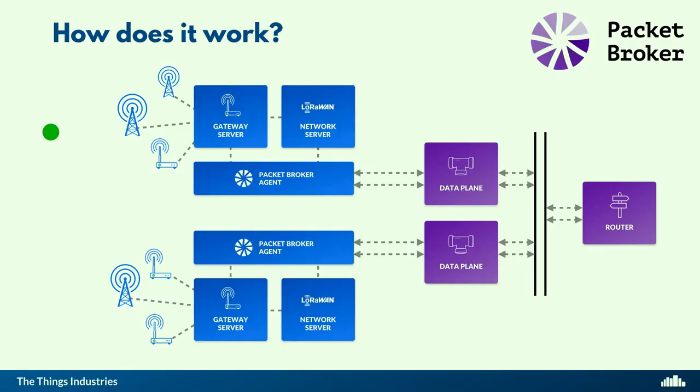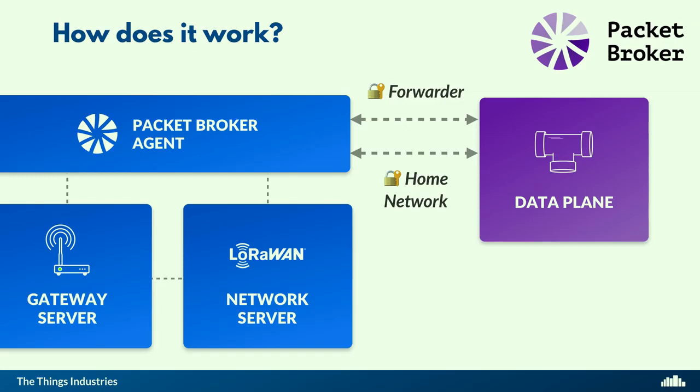Packet Broker has a few components: a data plane facing the network clusters, a router, and in between we have pub/sub — currently implemented using Kafka, but it could run on Google Cloud or open-source alternatives; you can also run it on-premises. The Packet Broker agent can have two connection roles with the data plane. As a forwarder, you forward traffic from your gateways to Packet Broker and subscribe to downlink traffic. When a home network sends a downlink message, it goes back through Packet Broker to the agent, which forwards it to the packet forwarder on the gateway.